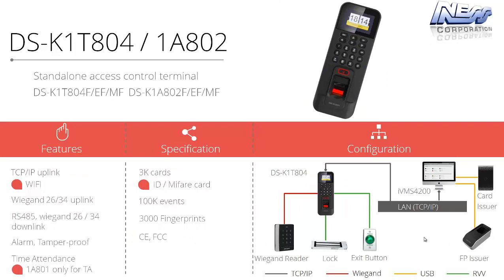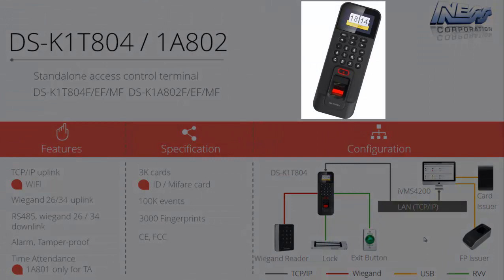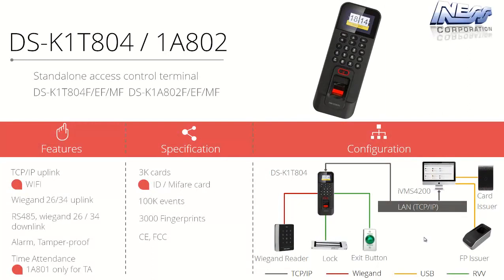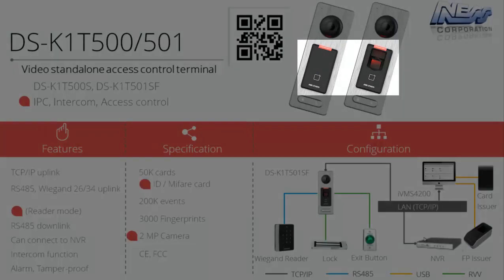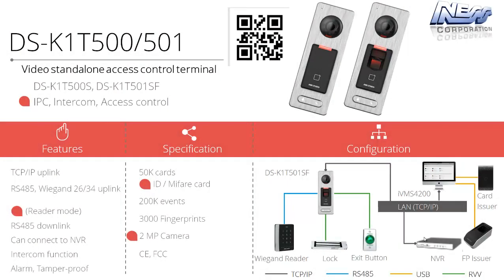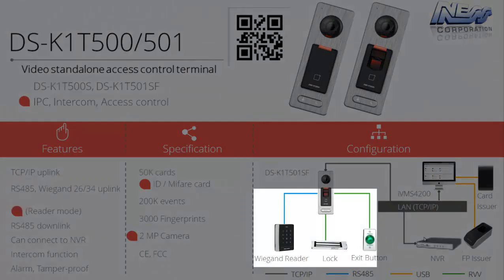In addition to the pro series terminal, there is the entry-level eco terminal, which includes a fingerprint reader as standard and Wi-Fi or hardwired LAN connectivity. It supports up to 3,000 fingerprints, 3,000 access cards, and 100,000 events — a very powerful unit usable for access control or time and attendance. Also available are video standalone access terminals with a wide-angle 2-megapixel camera that streams video to an NVR for continuous recording. These come in two models: one with a card reader, and one with a card reader and fingerprint reader. There is also a Wiegand input for an additional reader and an exit button for request-to-exit.